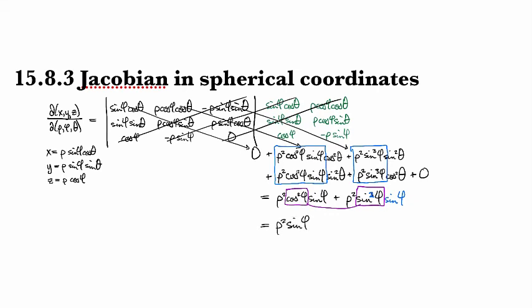So there is our Jacobian for spherical coordinates. Aren't you glad you never have to go through that computation again? But you do need to remember: whenever you set something up in spherical coordinates, it gets a ρ² sin(φ) — just like anything in cylindrical coordinates always has an r.